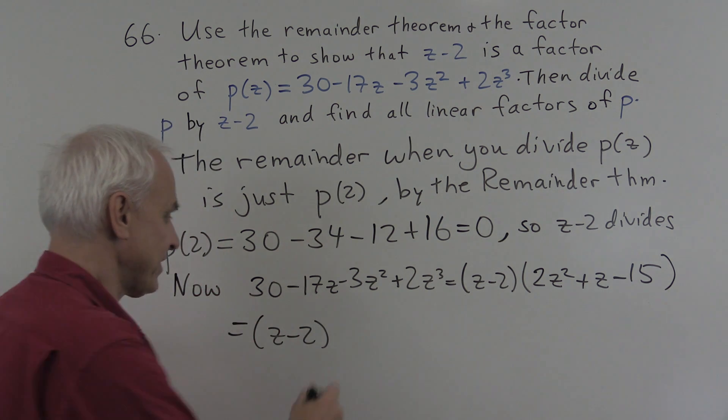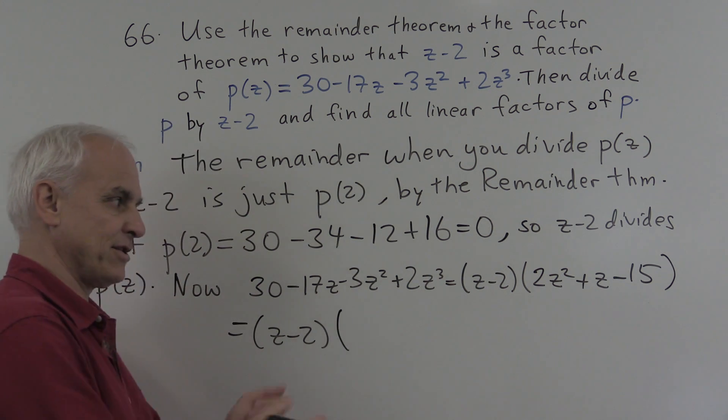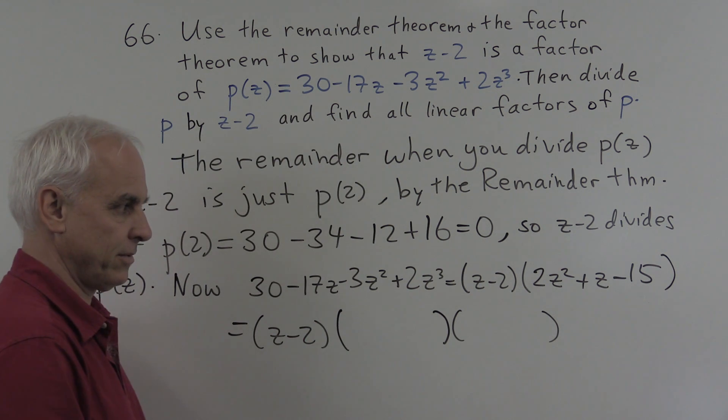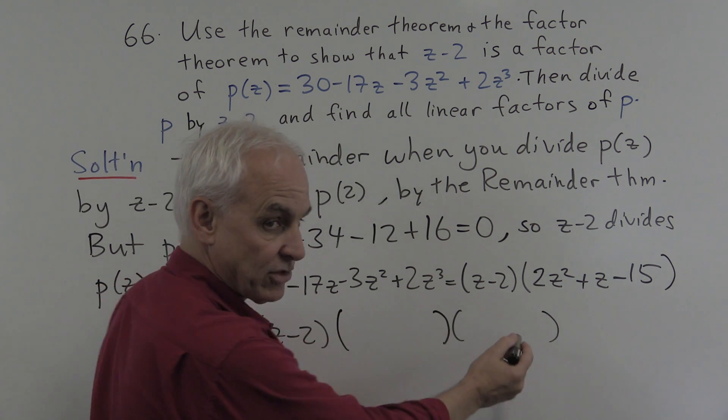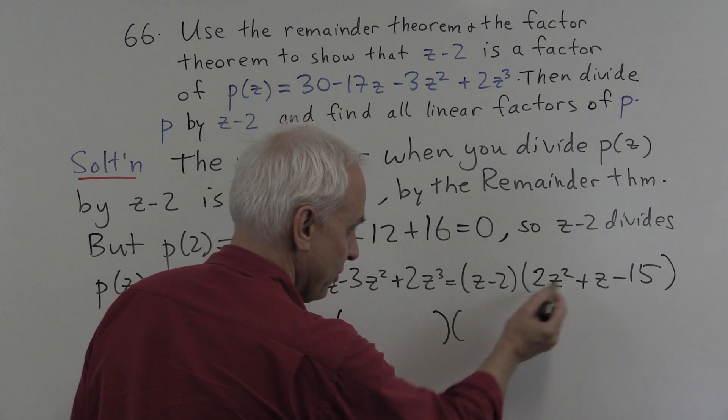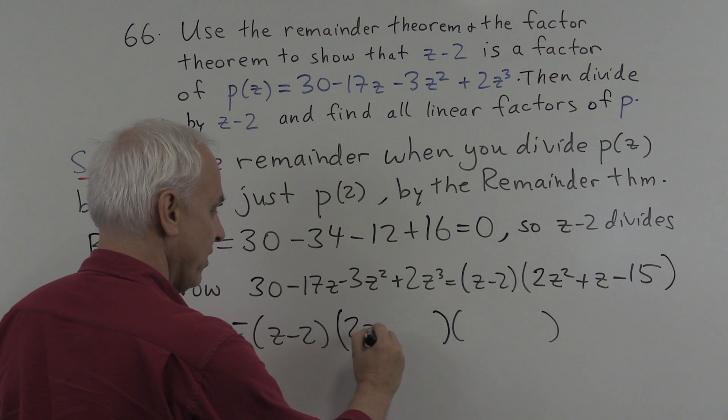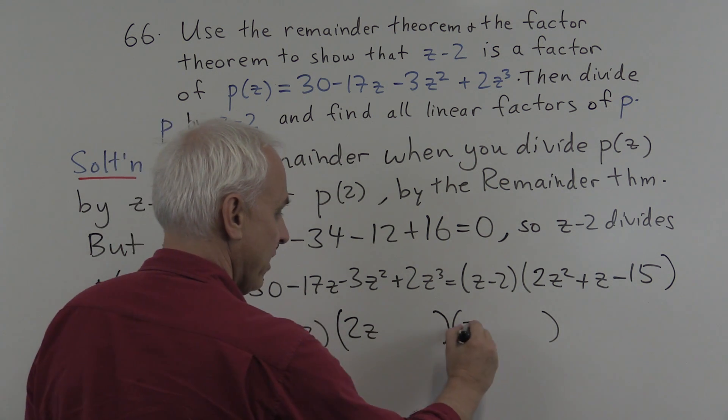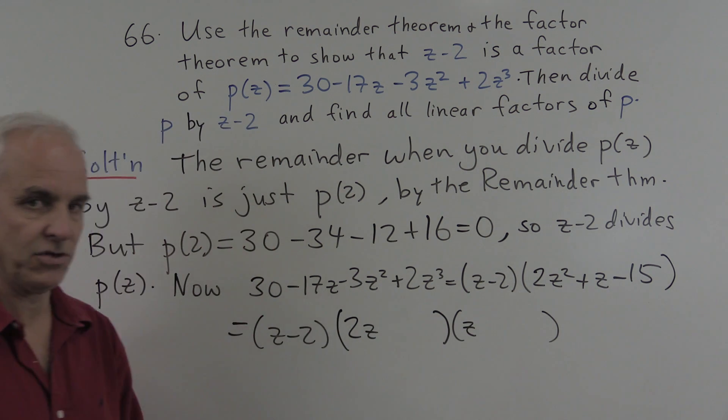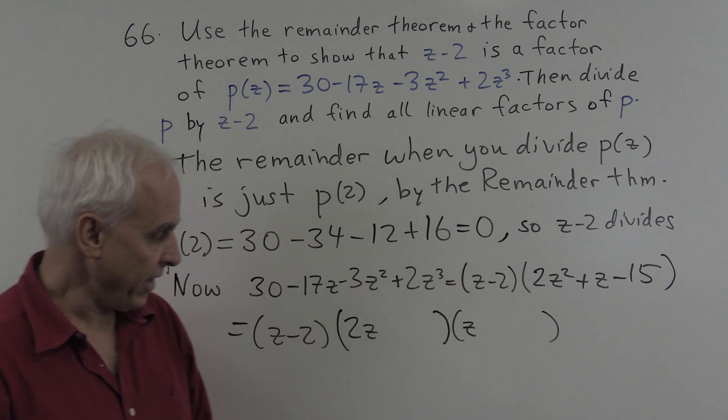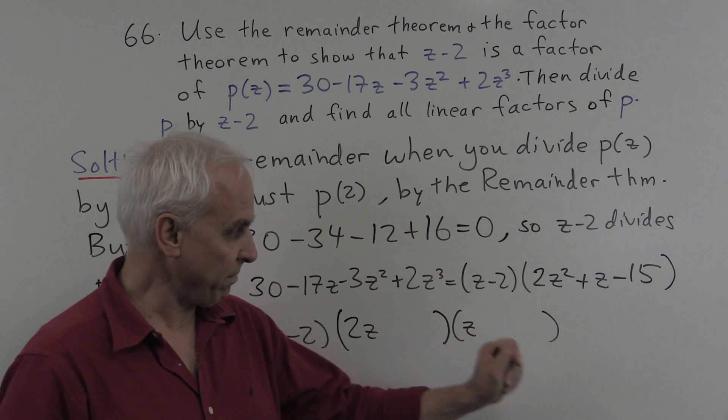But it's simpler if we just stare at things and write down what the two factors are, with a bit of guesswork, perhaps. So we need a factor of 2z². So we'll put a 2z in that term, and a z in that term, that'll guarantee we have 2z².